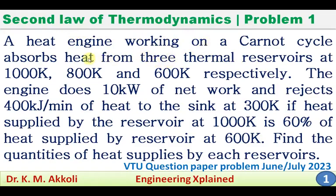The problem is: a heat engine working on a Carnot cycle absorbs heat from three thermal reservoirs at 1000 Kelvin, 800 Kelvin, and 600 Kelvin respectively. The engine does 10 kW of net work and rejects 400 kJ per minute of heat to the sink at 300 Kelvin. If the heat supplied by the reservoir at 1000 Kelvin is 60% of the heat supplied by the reservoir at 600 Kelvin, find the quantities of heat supplied by each reservoir.